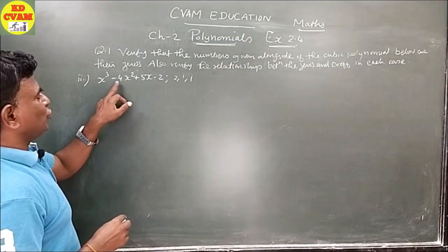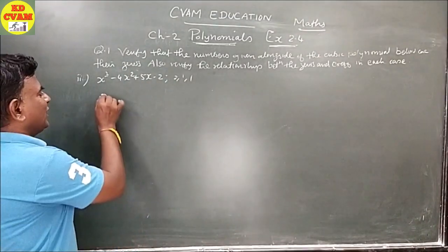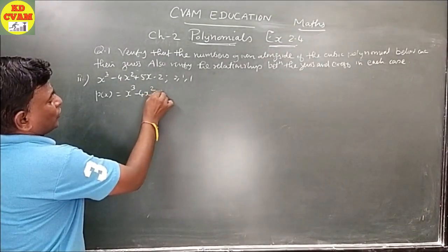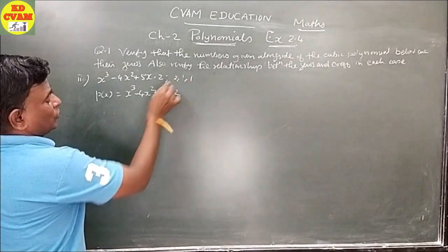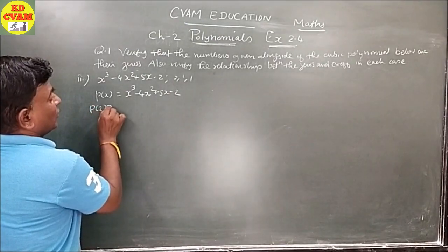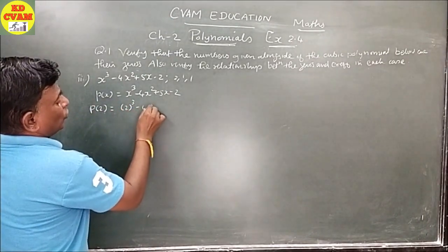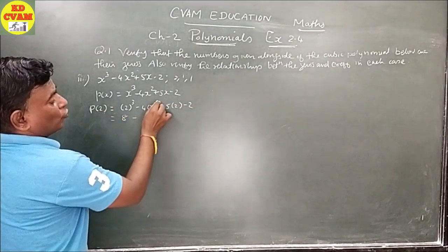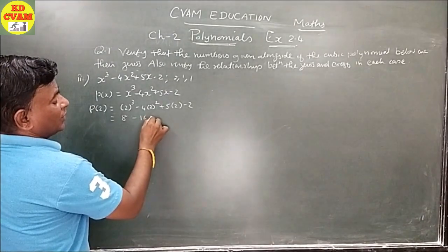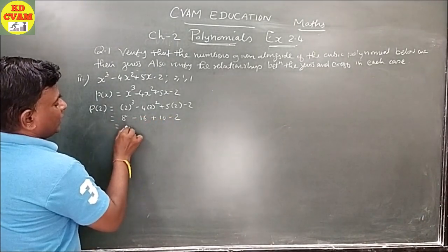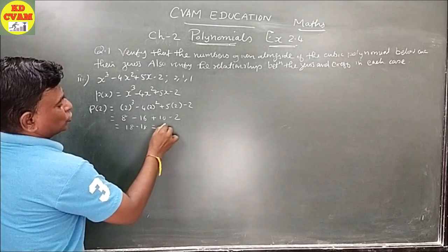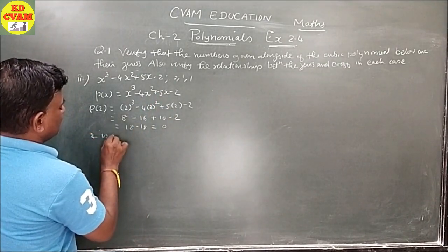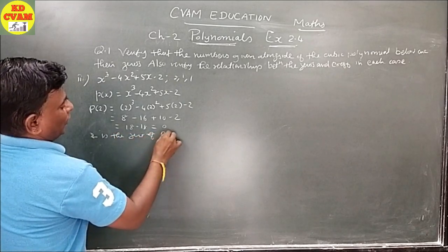Our next polynomial is P(X) = x³ - 4x² + 5x - 2. First, P(2): (2)³ - 4(2²) + 5(2) - 2 = 8 - 16 + 10 - 2 = 18 - 18 = 0. Therefore 2 is a zero of P(X).